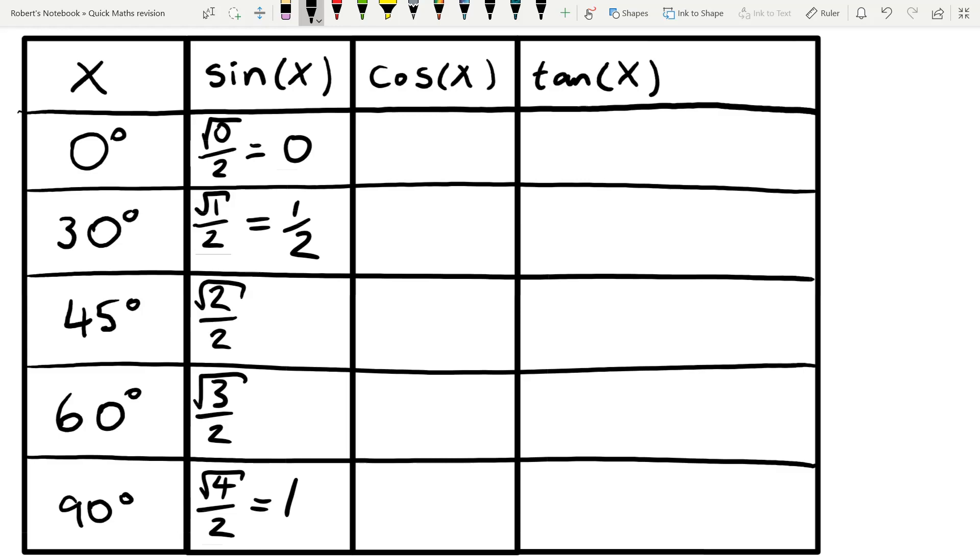And now the trick is that for the cos column, all we do is we write the sine column, but backwards. So at the bottom now we're going to write 0, then we're going to write 1 half, then we're going to write root 2 over 2, root 3 over 2, and then 1. So that's nice and easy.